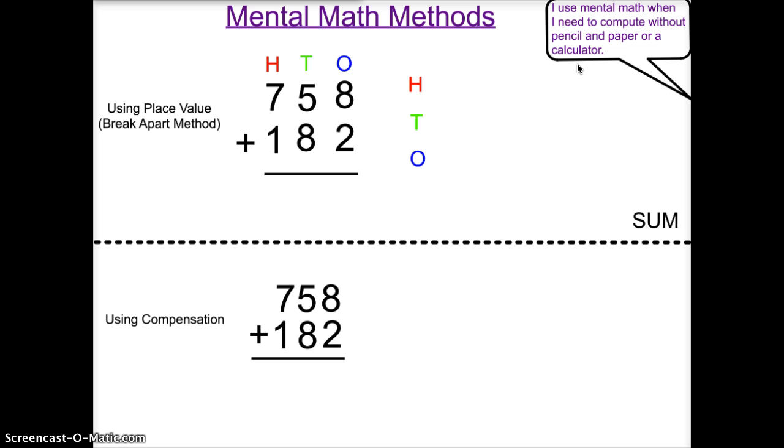Sometimes if numbers end in a zero digit or several zero digits, it's very simple to do. And you just have to add one or two digits. But in the case of a number, 758, plus another number, 182,